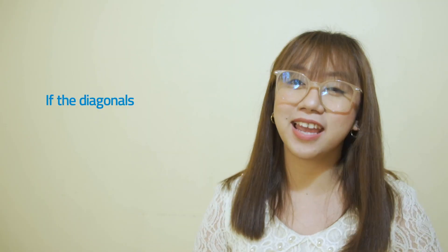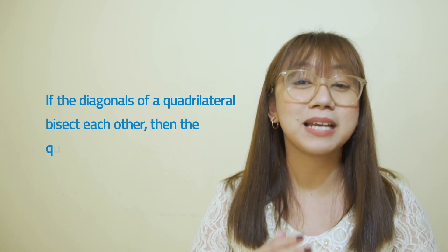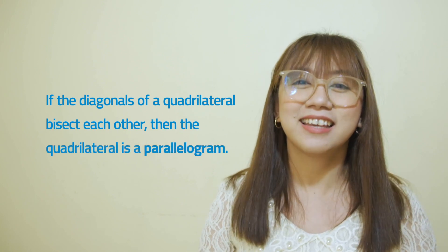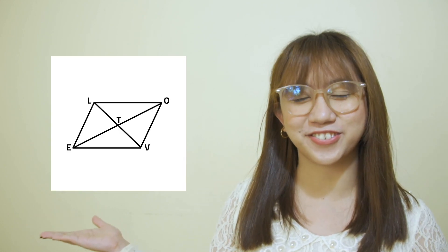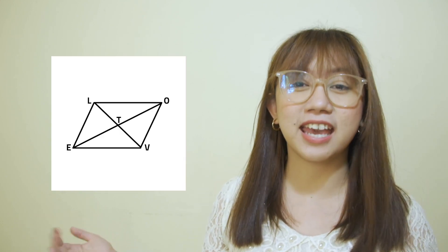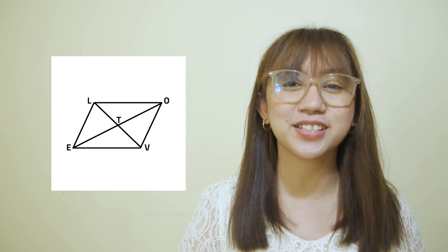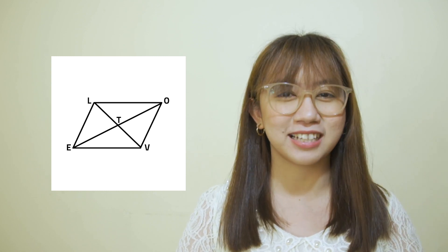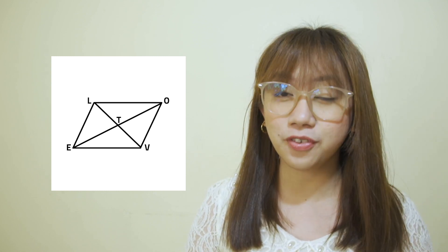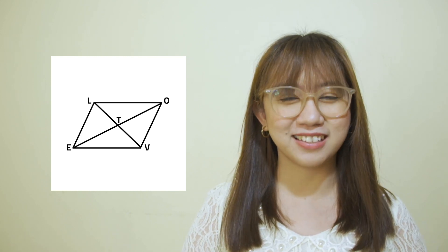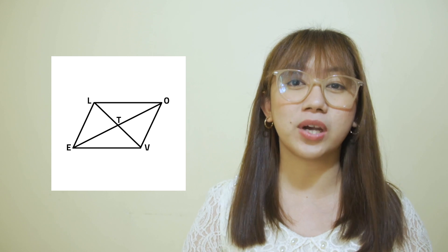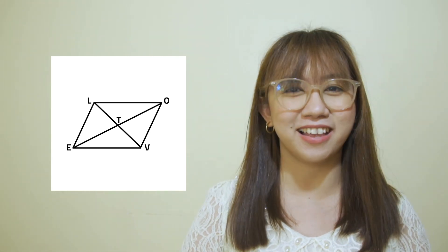Now let's recall diagonals. If the diagonals of a quadrilateral bisect each other, then the quadrilateral is a Parallelogram. The given quadrilateral is LOVE. LV and OE are the diagonals of quadrilateral LOVE. LV bisects OE, and OE bisects LV. This proves that quadrilateral LOVE is a Parallelogram.